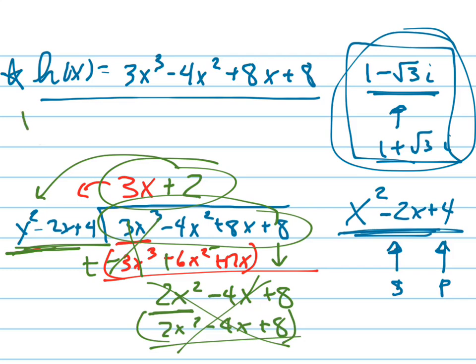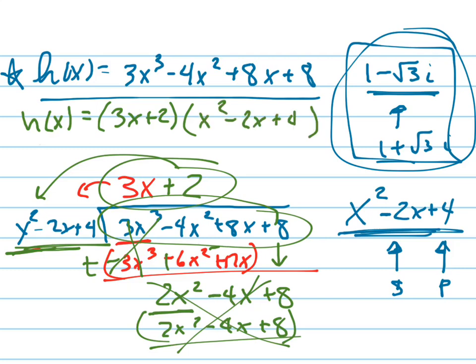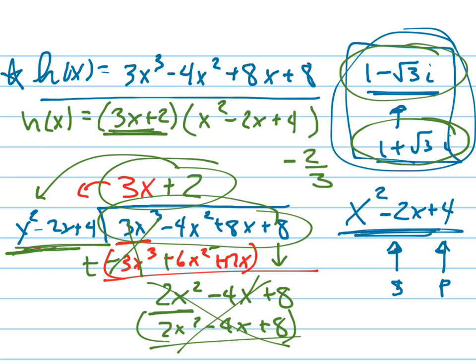So h of x, if they want me to rewrite it as a product of factors, is 3x plus 2 times x squared minus 2x plus 4. If they want me to name the other zeros, the three zeros are the one they gave me, its conjugate, and the zero that comes from that last factor, which is negative 2 thirds.